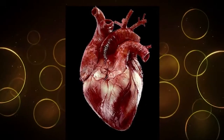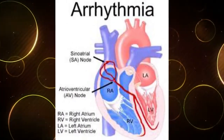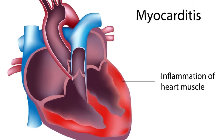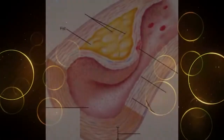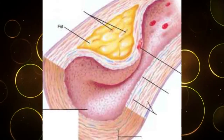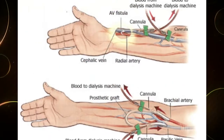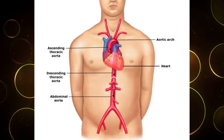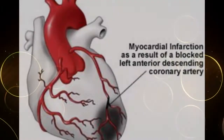Thromboemboli mainly originate in the heart due to ischemic heart disease, arrhythmias, valvular disease, and myocardial diseases such as myocarditis, cardiomyopathies, and amyloidosis. They can also be seen in ulcerated atheromatous plaques, aortic aneurysm, venous shunts in dialysis patients, deep veins of the leg, and at the bifurcation of the aorta. The affected tissue's vulnerability to anoxia can cause infarction.